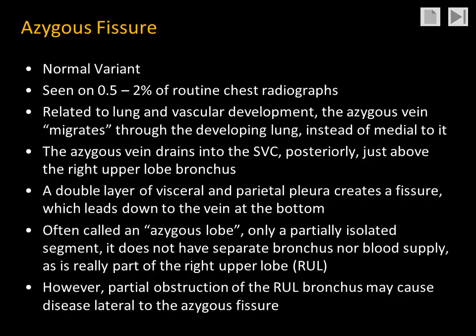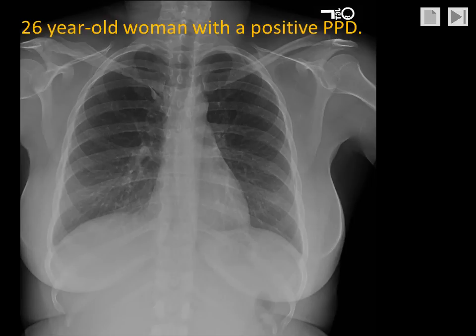Although this is often called an azygous lobe, the medial portion of the right upper lobe is not a true lobe because it does not have a separate bronchus nor a separate blood supply. However, in patients who have an azygous fissure, there is oftentimes anomalous partial obstruction of the right upper lobe bronchus that may cause disease in the lateral portion of the right upper lobe.